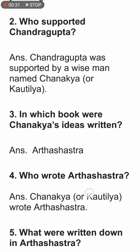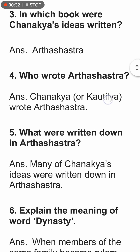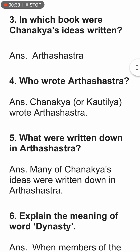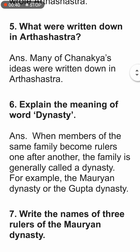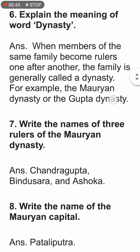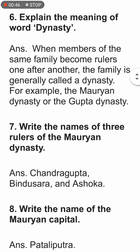In which book did Chanakya write his ideas? The book is called Arthashastra. Chanakya, also known as Kautilya, wrote the Arthashastra. Many of Chanakya's ideas were written down in this book.